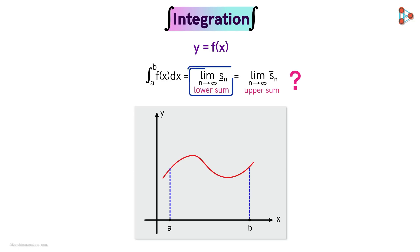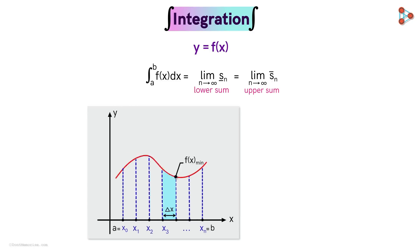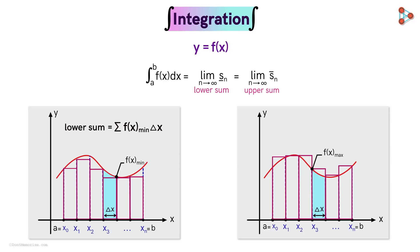So what are the lower sum and the upper sum? To find them, we first divide the interval into n sub-intervals. For the lower sum we consider the minimum value of the function in each sub-interval, and for the upper sum we consider the maximum value. The rectangles formed using these values as heights give us the lower and upper sums. The lower sum is the sum of the areas of these rectangles — symbolically written as shown. The upper sum is the sum of the areas of these taller rectangles — also written symbolically.